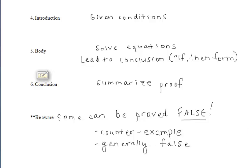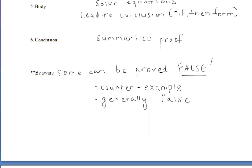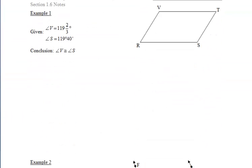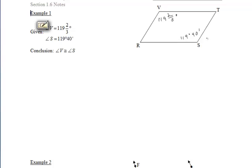We'll do some examples together during the second video. Let's take a look at our first example. We're given that the measure of angle V is equal to 119 and 2/3 degrees, while the measure of angle S is 119 degrees and 40 minutes. We want to conclude that angle V is congruent to angle S.